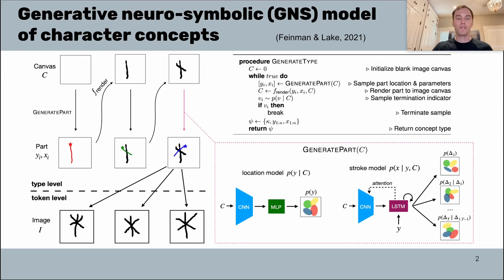In our paper we developed a generative neuro-symbolic, or GNS, model of handwritten character concepts. The model represents characters as a probabilistic program for generating new examples.